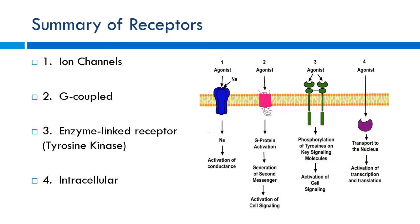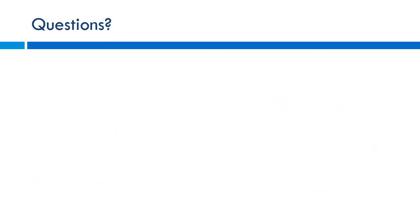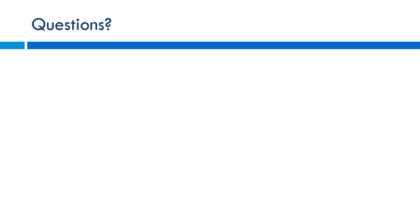Those are the main receptor types. Next we'll move into secondary messengers and look at downstream effects with specific drug examples. Any questions? I know it seems abstract now, but it'll become more applicable once we get into pharmacology one with real drugs. Think of these concepts like vegetables — you have to get them down before you get to the meat next semester.